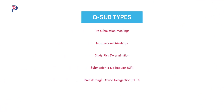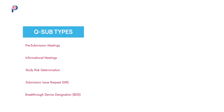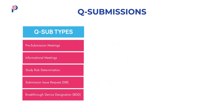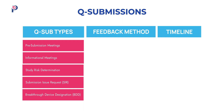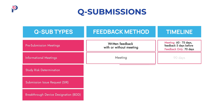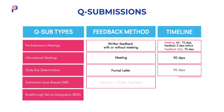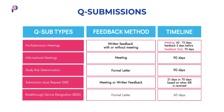There are different types of Q-Subs, such as pre-submission meetings, informational meetings, and breakthrough device designation. Each type has its own review process and timeline, as well as unique characteristics that make it important to know which type will be beneficial to you.